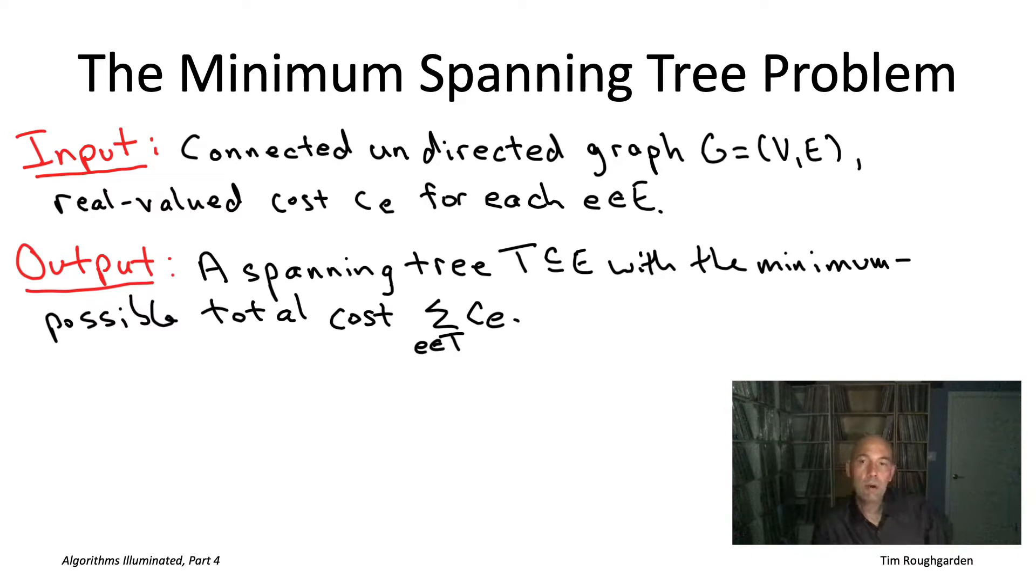The responsibility of an algorithm for the MST problem is to compute a spanning tree of the graph, and among all spanning trees compute one that minimizes the sum of the costs of the edges in the tree. So just to remind you, by spanning tree, it's what it sounds like. It's a tree, so there's no cycles. And on the other hand, it's spanning, so it covers all of the vertices of the graph. In other words, for each pair of vertices v and w, there should be a path in the spanning tree T from v to w.